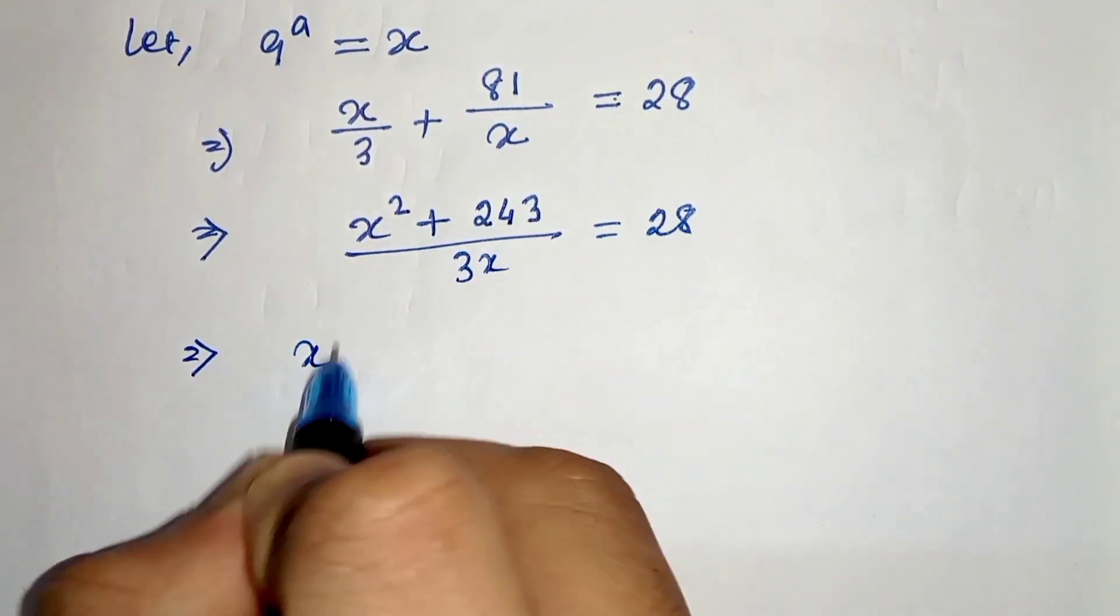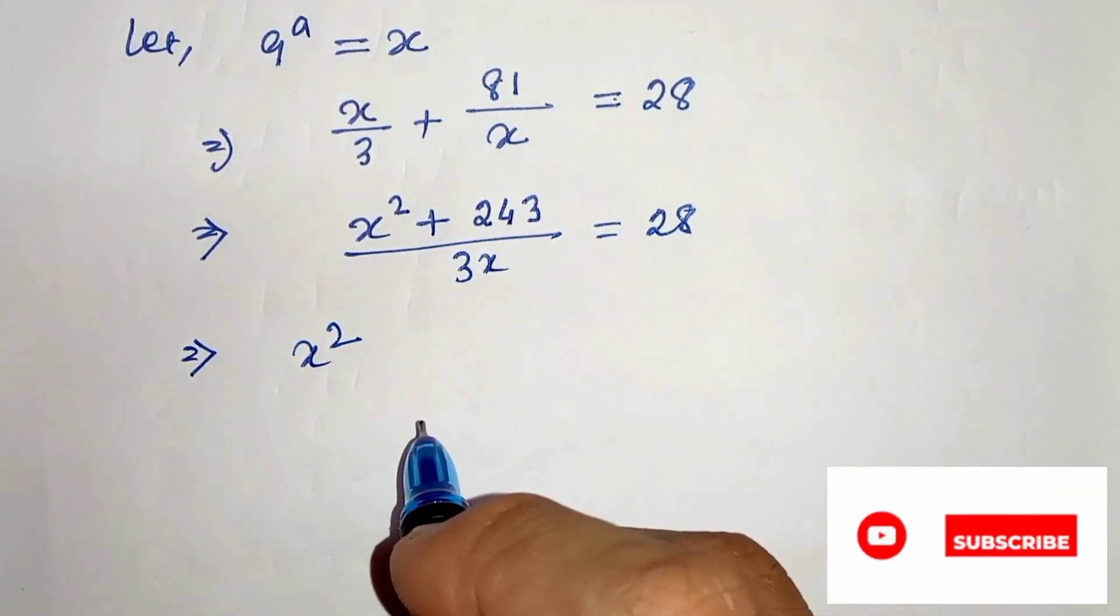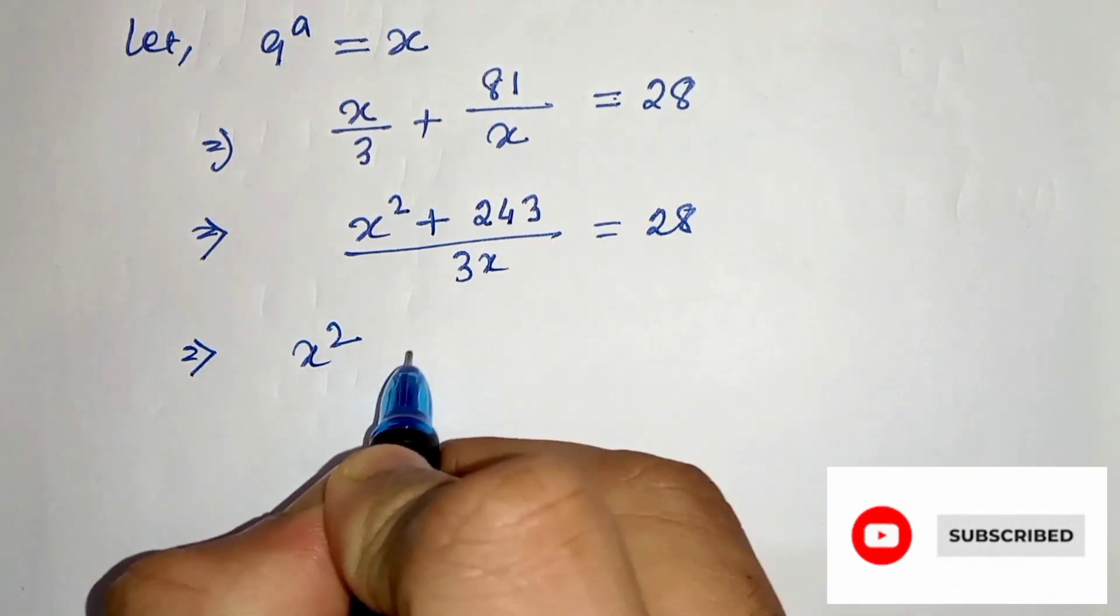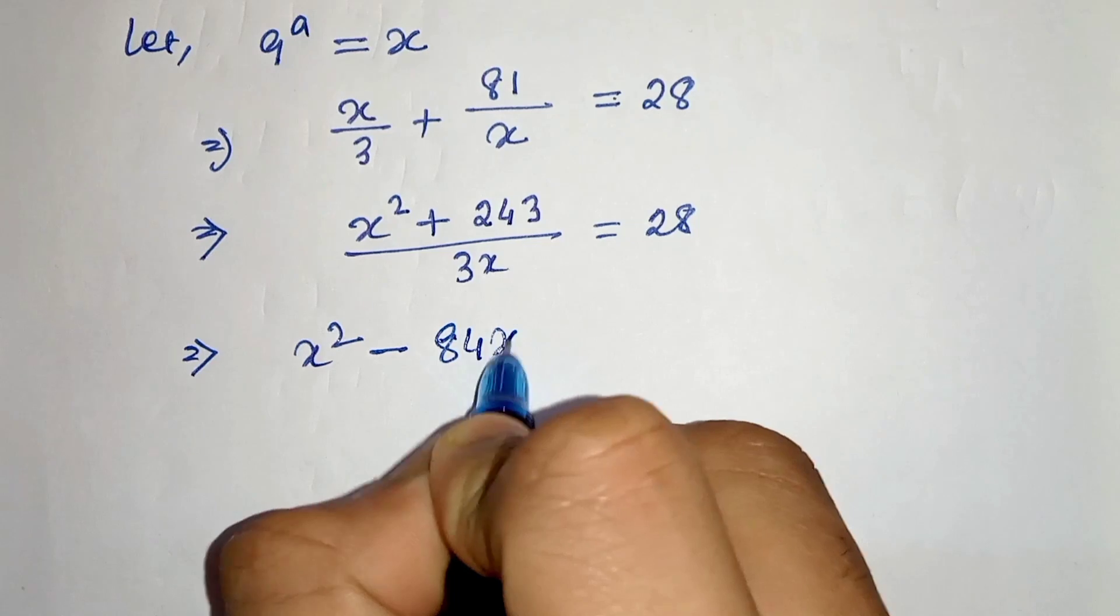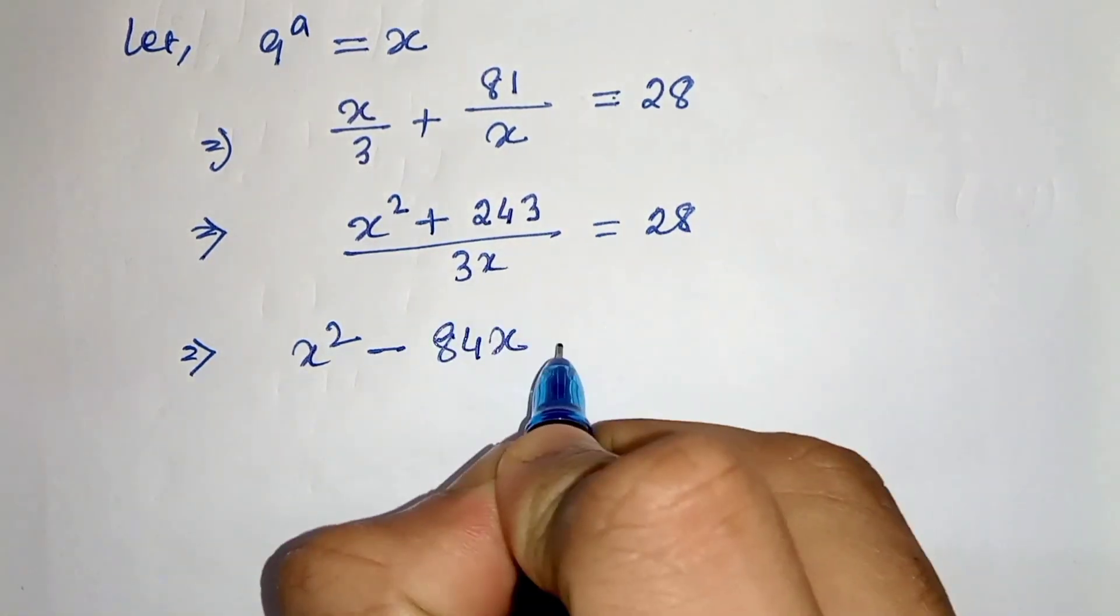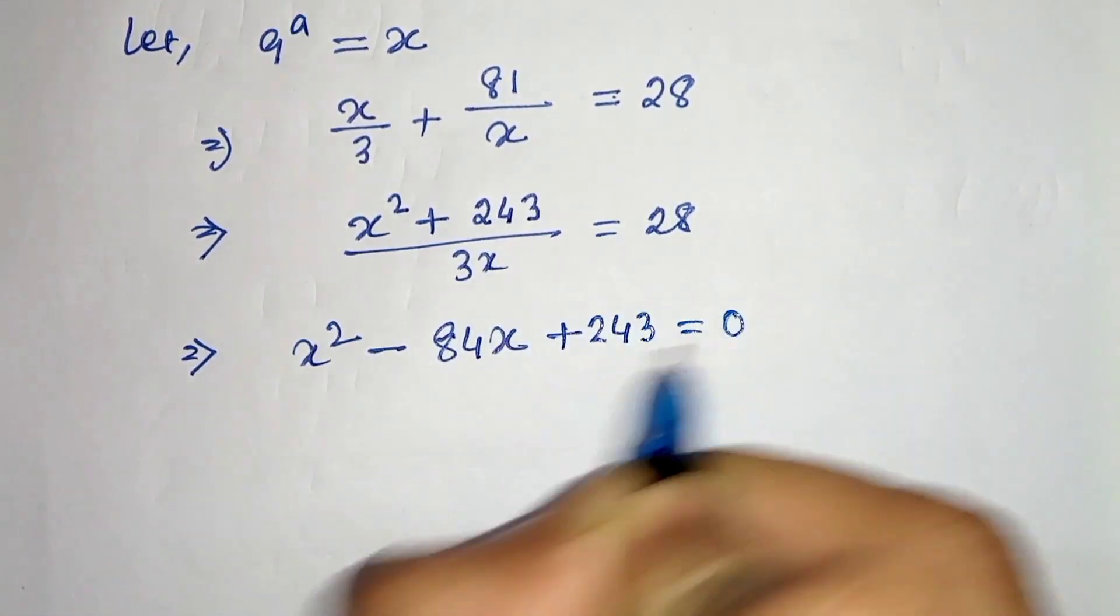In the next step we can write x squared minus 3x times 28 is 84x, and if we take this to the left hand side it will be minus 84x plus 243 equals 0.